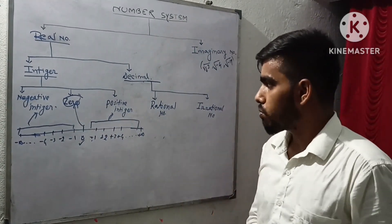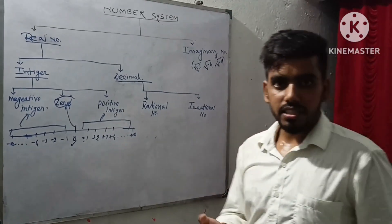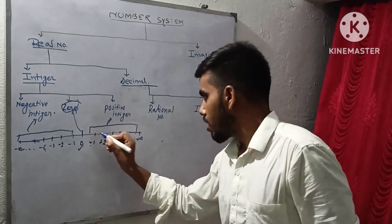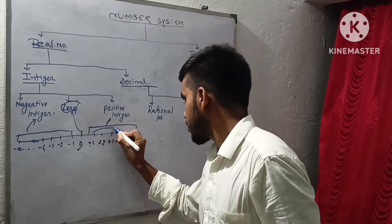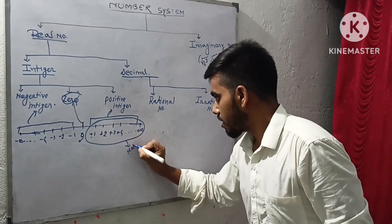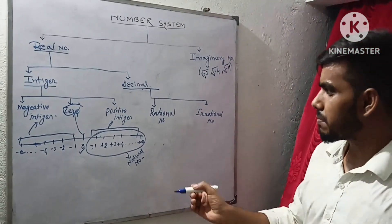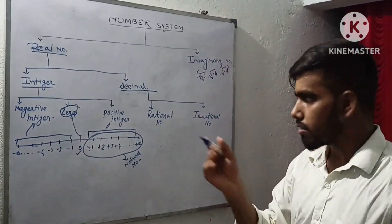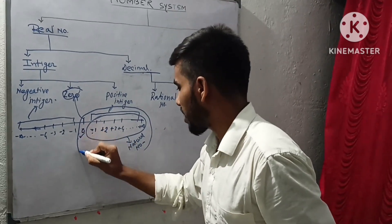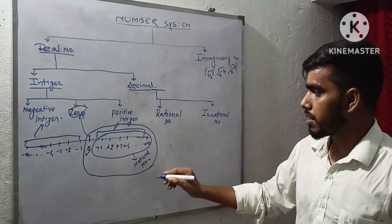In books there is also the concept of natural numbers and whole numbers. Natural numbers are nothing but positive integers — if we count from plus one to plus infinity, all those numbers belong to natural numbers. Whole numbers are formed by adding zero to the natural numbers — so if we count from zero to infinity, that set is called whole numbers.